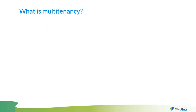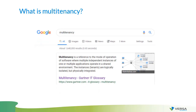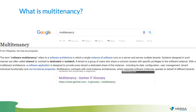Let's begin — what is multi-tenancy? If we open Google and enter exactly this request, the very first result points to Gartner's definition: multi-tenancy is a reference to the model of operation of software where multiple independent instances of one or multiple applications operate in a shared environment. Wikipedia defines it as a software architecture in which a single instance of software runs on a server and serves multiple tenants. Systems designed in such a manner are often called shared systems.